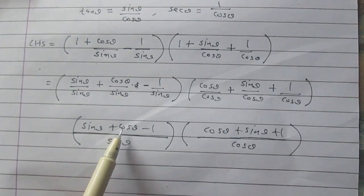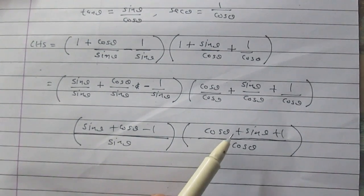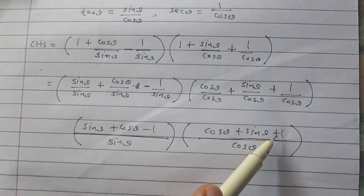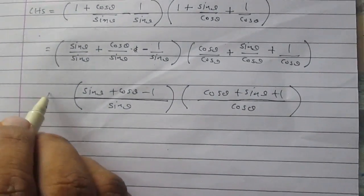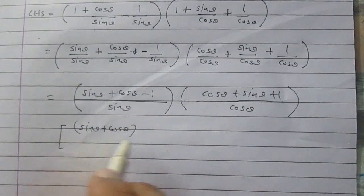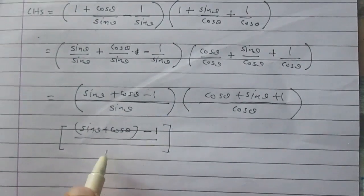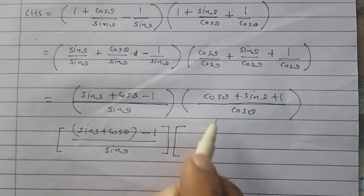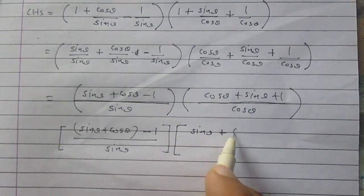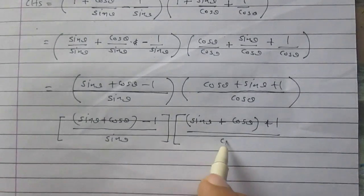The numerator of the first part is sin θ + cos θ - 1, and the numerator of the second part is cos θ + sin θ + 1, which we can also write as sin θ + cos θ + 1. So the LHS becomes [(sin θ + cos θ - 1) / sin θ] multiplied by [(sin θ + cos θ + 1) / cos θ].